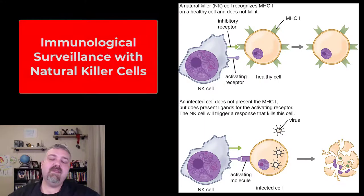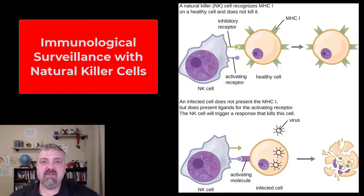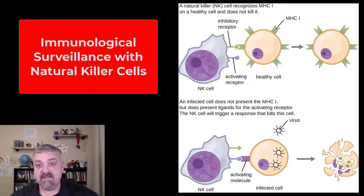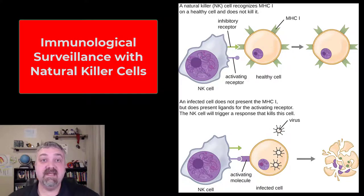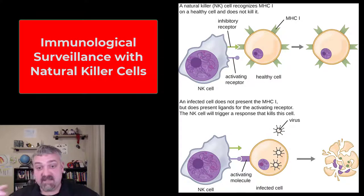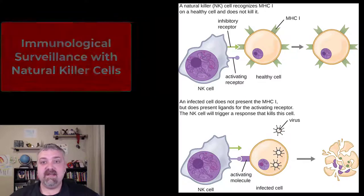Hey everybody, Dr. O here. In this video we're going to talk about what's called immunological surveillance and the cell that's responsible for immunological surveillance is the NK, or natural killer cell. It's a type of lymphocyte — so we won't talk about it again with the T cells and the B cells. It's a separate type of lymphocyte.